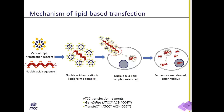This happens when the cell undergoes mitosis and the nuclear membrane breaks down, and hopefully the DNA gets trapped in the nuclei of the newly formed daughter cells. This entrapment in the daughter cell nuclei is somewhat random, so to increase the likelihood of this happening, you want to use the most efficient delivery system method available.